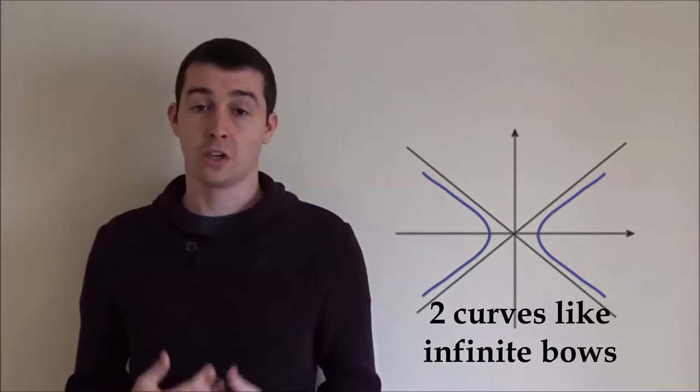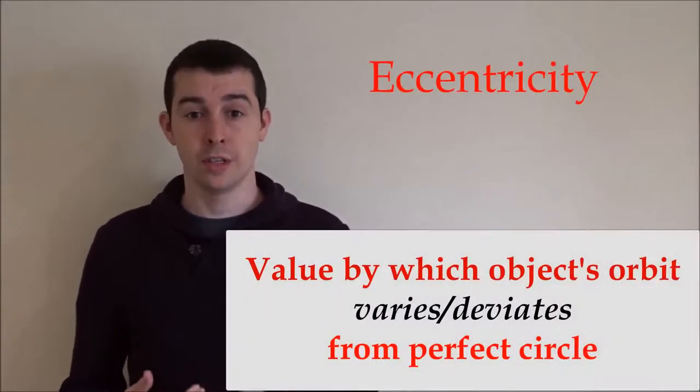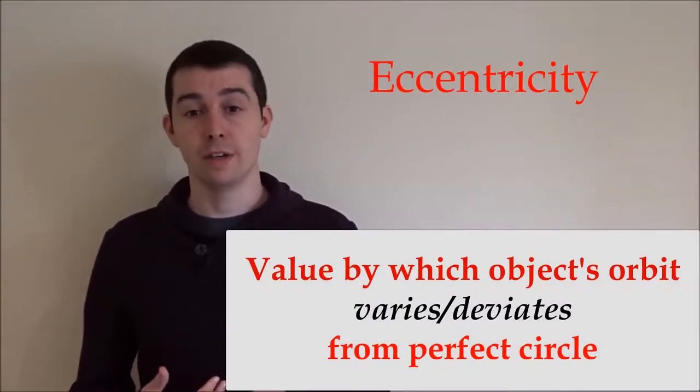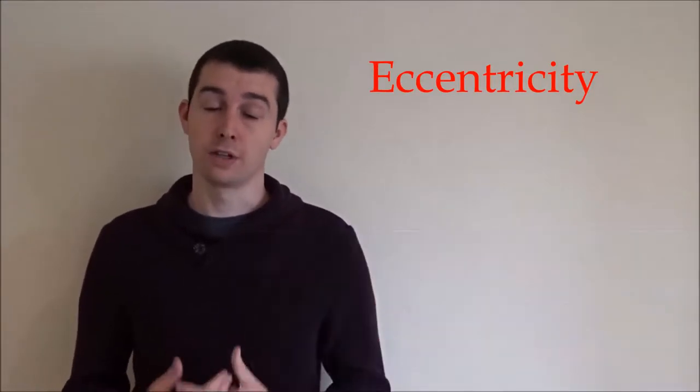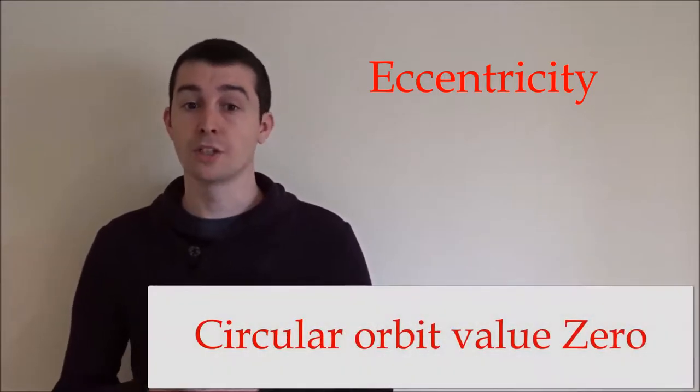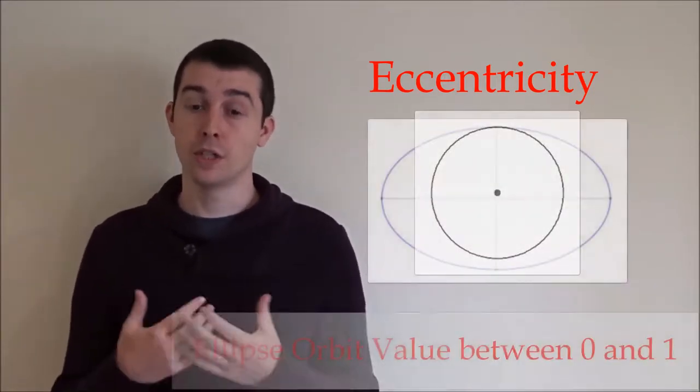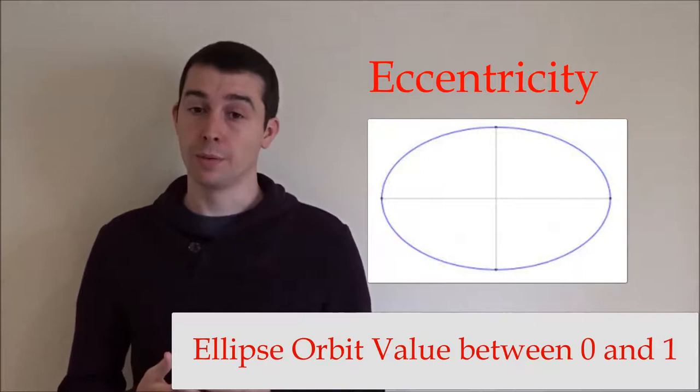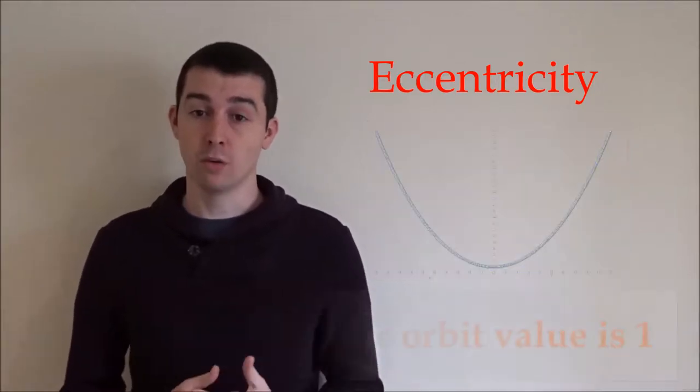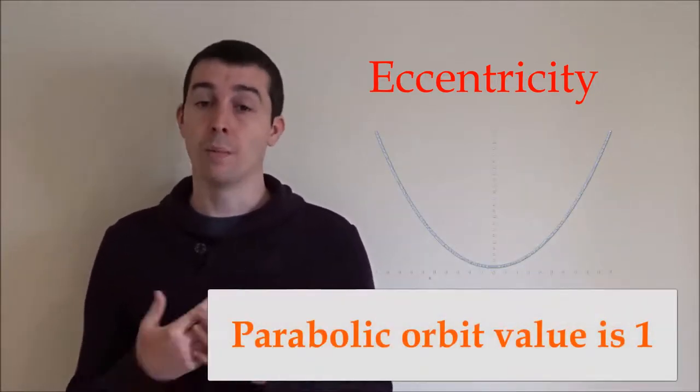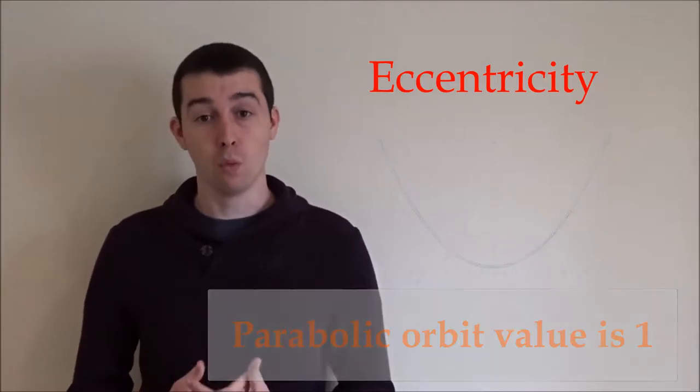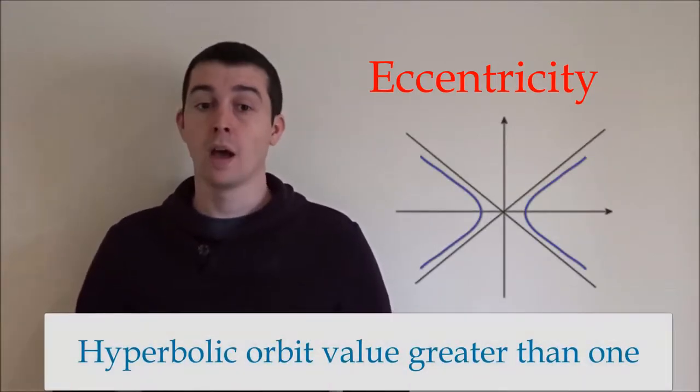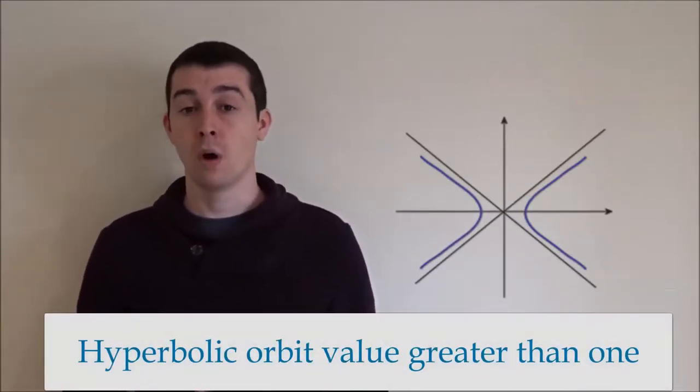When discussing orbits we must consider eccentricity. Eccentricity is the value by which an object's orbit varies or deviates from a perfect circle. A circular orbit has a value of zero. An ellipse orbit has a value between zero and one. A parabolic orbit has a value of one. Finally, a hyperbolic orbit has a value greater than one.